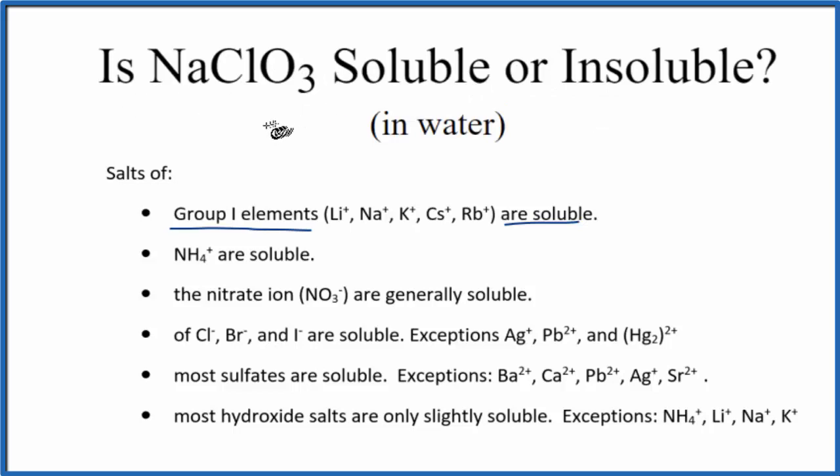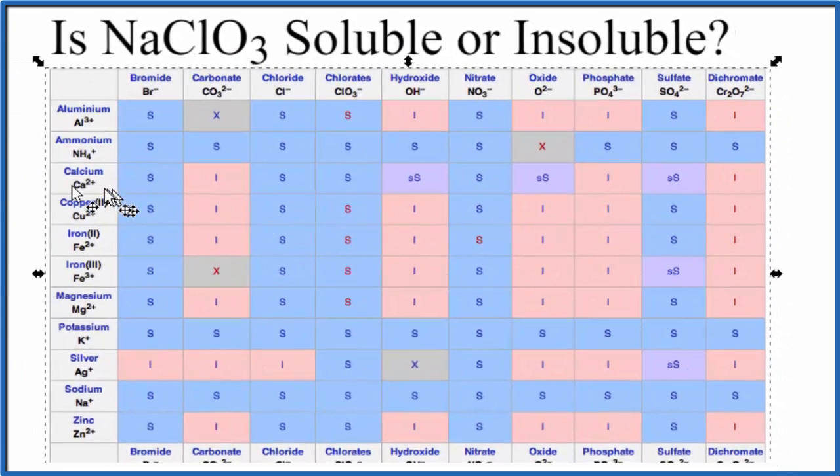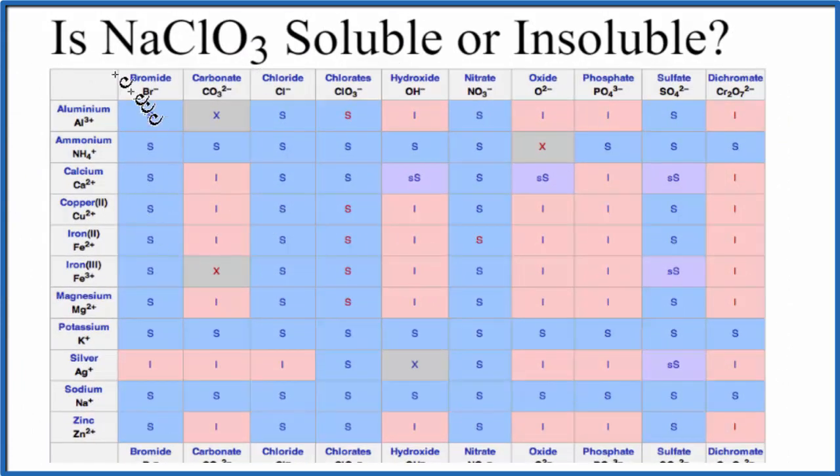We could also look at a solubility chart. So the positive ions, they're on the left, and the negative ions are across the top. So for our cations,